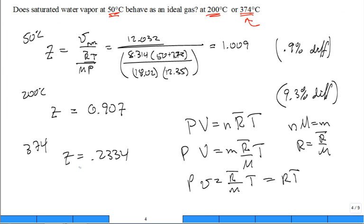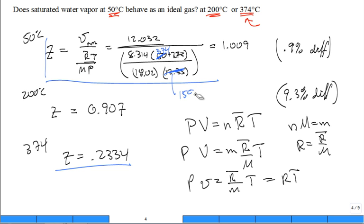So that's consistent — the compressibility factor at the critical point. We calculated it using the same equation at T = 374°C and the critical point saturation pressure of approximately 22,090 kPa, giving Z ≈ 0.2334. That's the critical point compressibility factor — not close to 1 at all.